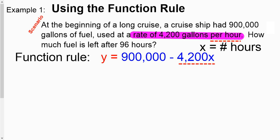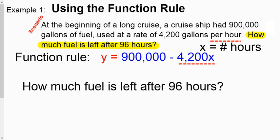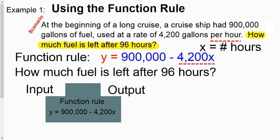So when it says how much fuel is left after 96 hours, well, it's not too difficult to imagine what's going to happen here. We have a function rule here. And so if you remember the input-output machine, if we shove a number in, it's going to shove that value into the rule and spit out the result.